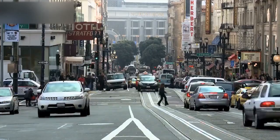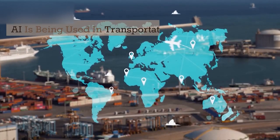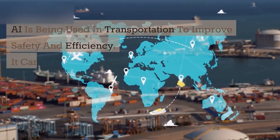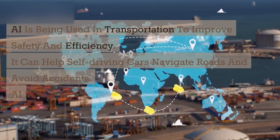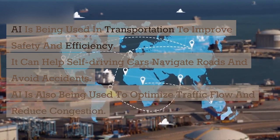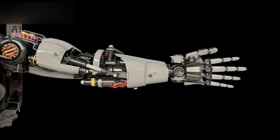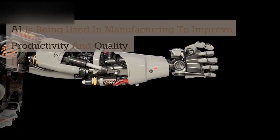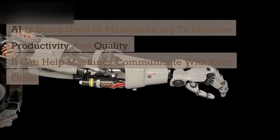Two: Transportation. AI is being used in transportation to improve safety and efficiency. It can help self-driving cars navigate roads and avoid accidents. AI is also being used to optimize traffic flow and reduce congestion. Three: Manufacturing. AI is being used in manufacturing to improve productivity and quality. It can help machines communicate with each other and adjust production based on demand.